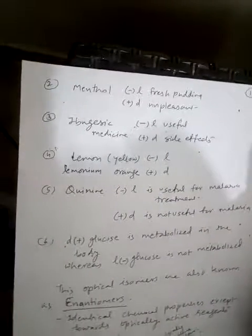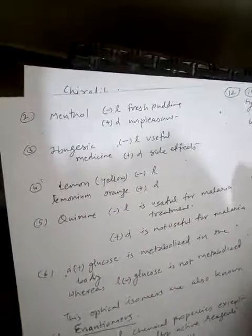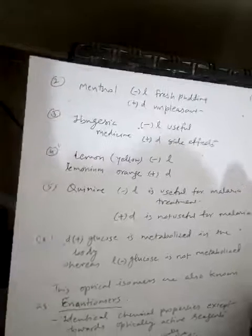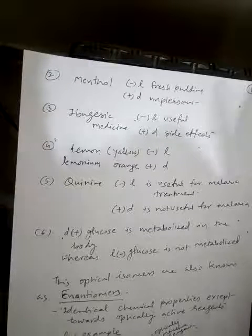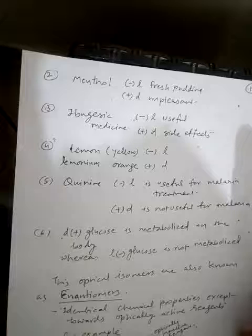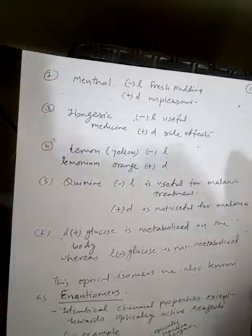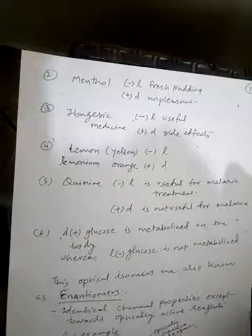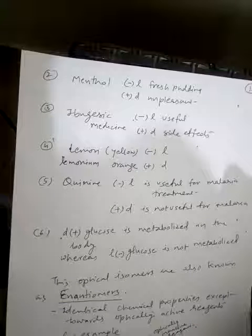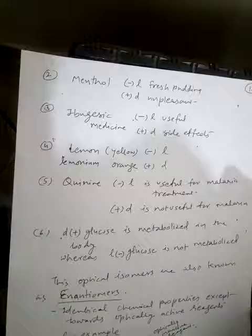Another example: menthol, known as pudina. Fresh pudina has levorotatory optical isomers, whereas old or spoiled pudina has an unpleasant smell and is dextrorotatory. Ibuprofen medicine — its minus (levorotatory) stereoisomer is useful, whereas the dextrorotatory form has side effects.